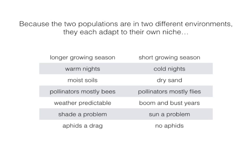On the coastal side the soils are very fine and hold water so they stay moist, whereas on the desert side the soil is sand that dries out easily. The pollinators are mostly bees on the coastal side, whereas on the desert side they're mostly flies. The weather is more predictable on the coast, whereas the desert has boom years with lots of rain and bust years with none. On the coastal side shade is a problem for plants, whereas on the desert side sun is a problem. And on the coastal side there are lots of aphids, whereas on the desert side aphids can't live very well.